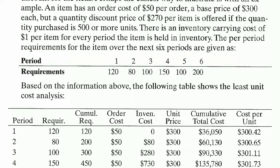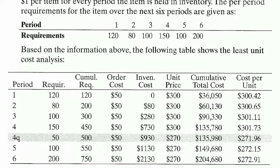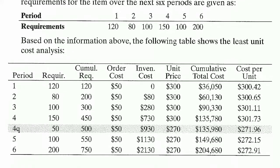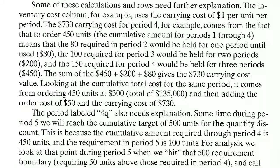The part period requirements for the item over the next six periods are: Period 1 requirements: 120, Period 2 requirements: 80, Period 3 requirements: 100, Period 4 requirements: 150, Period 5 requirements: 100, and Period 6 requirements: 200. Based on this information, the following table shows the least unit cost analysis.